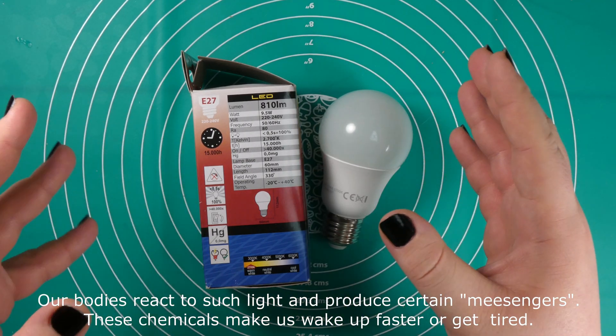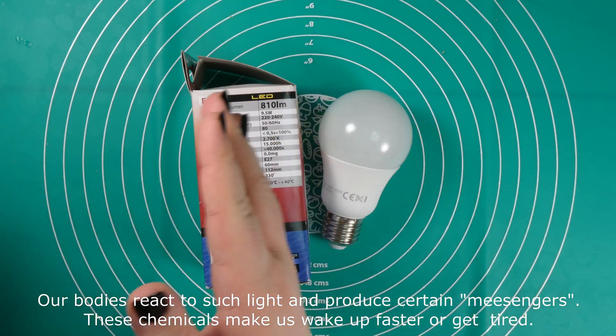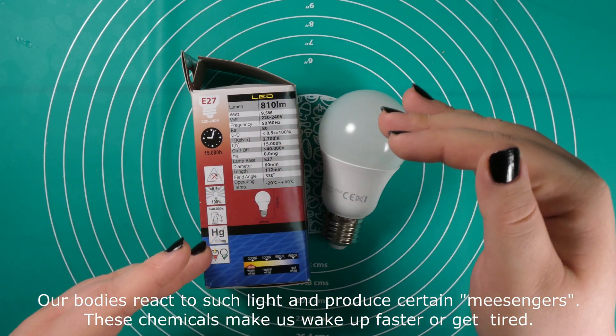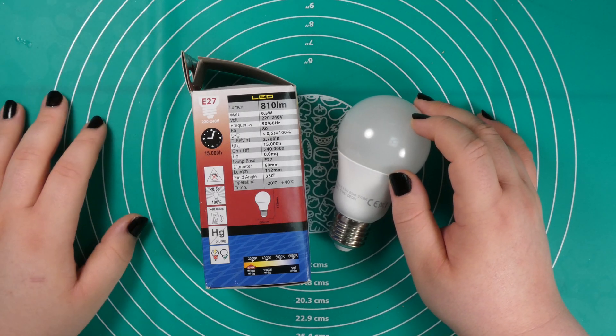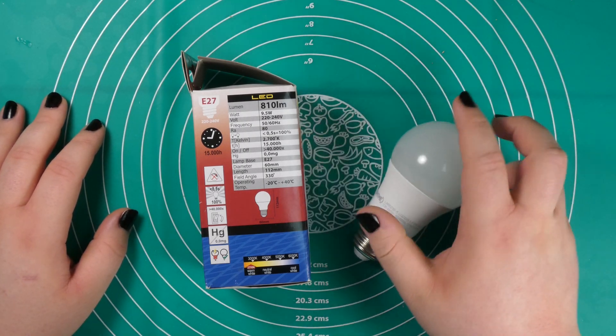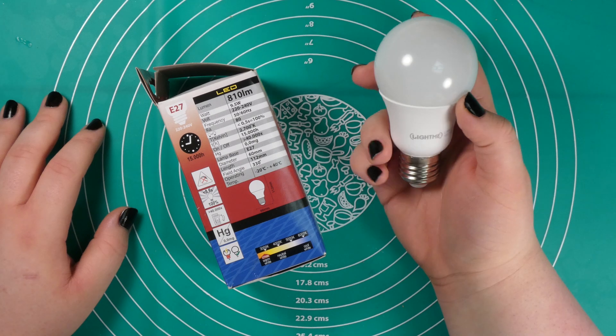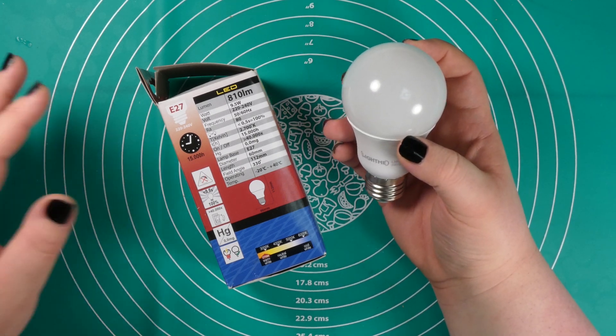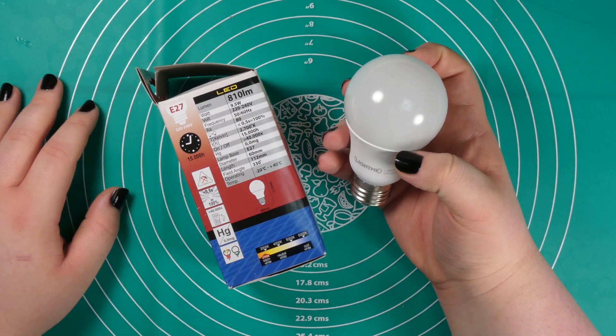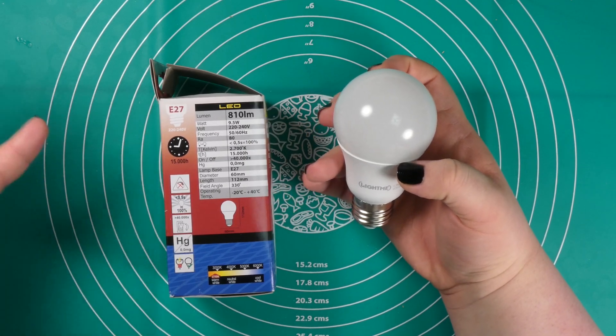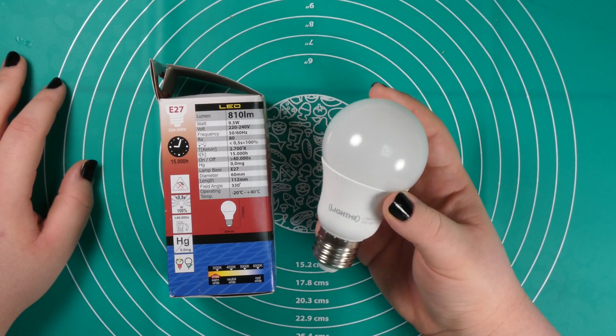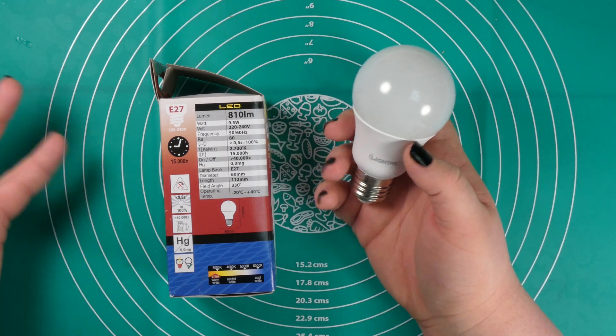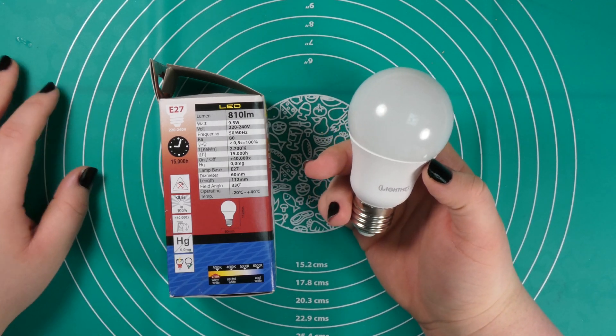And in the evening when outside the color spectrum shifts into the red spectrum, our body tries to calm down and we do get tired. This is the same effect, so if you try to stay up late you should use cold colors. If you try to get tired and go into bed you should use a reddish color light.